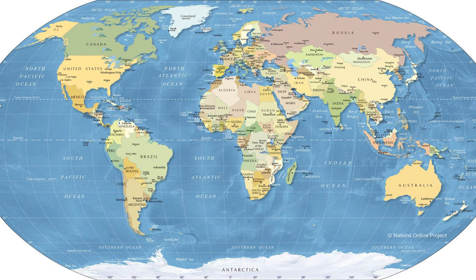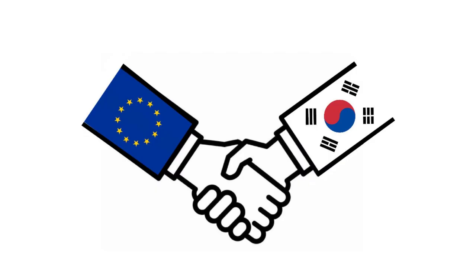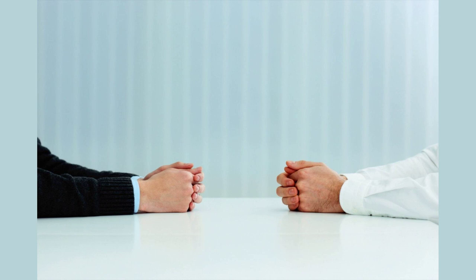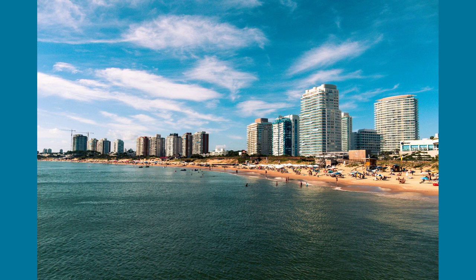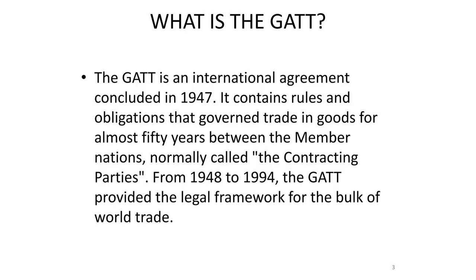Initially, it consisted of just 23 countries, but over time it grew to encompass a significant portion of the world. The GATT aimed to promote free and fair trade by reducing tariffs and other barriers to commerce. It provided a platform for negotiations, dispute resolution, and the establishment of rules governing international trade. As we explore the history of the GATT, we'll discover how it evolved, adapted, and ultimately paved the way for the modern global trading system we know today.